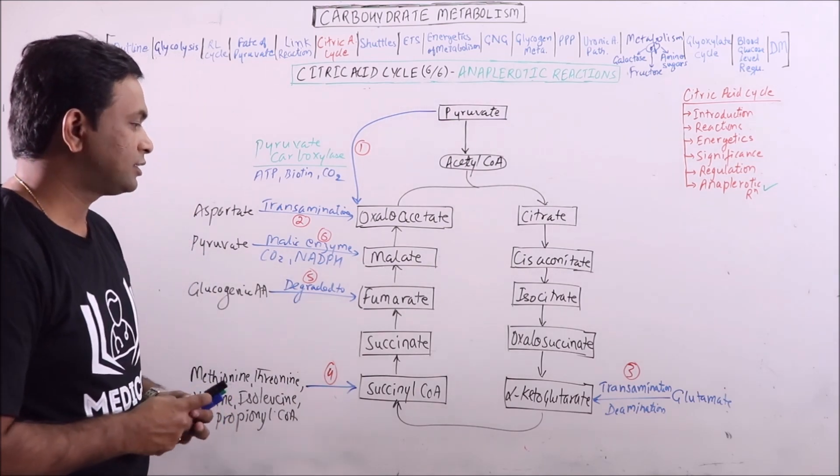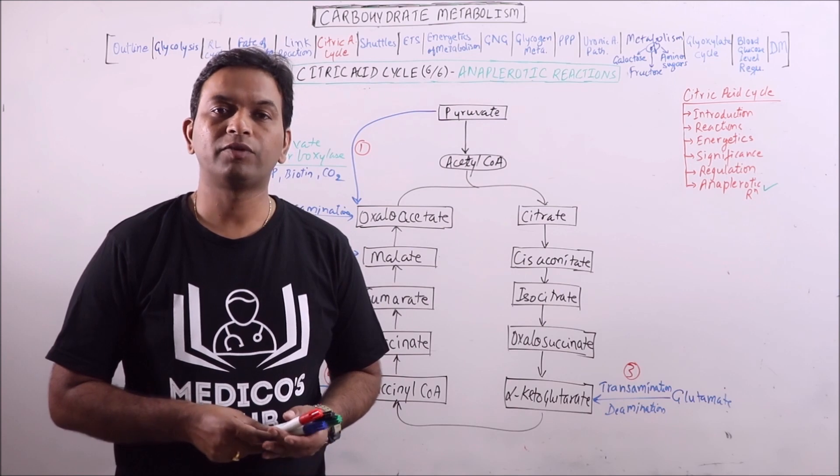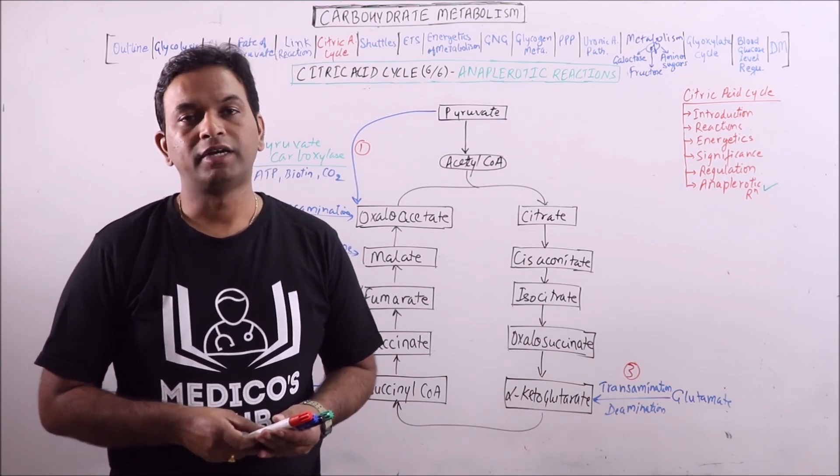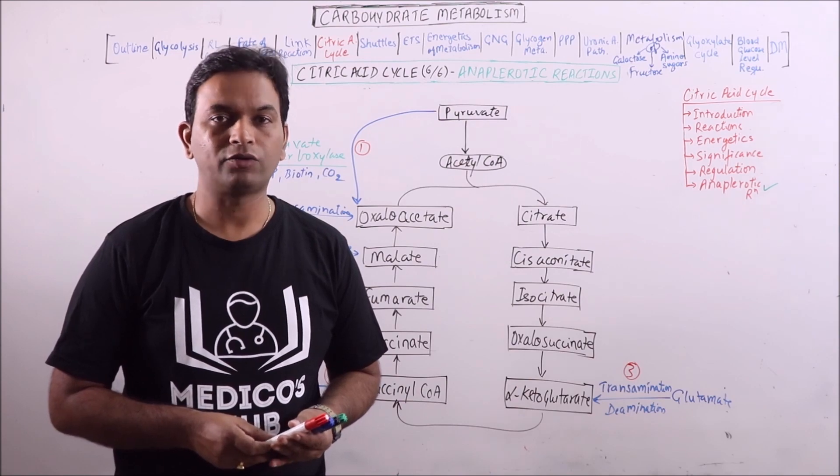So these are the various steps which act as anaplerotic reactions to replenish the intermediates of TCA cycle. Hit the like button, share and subscribe our channel to get the latest updates and notifications.